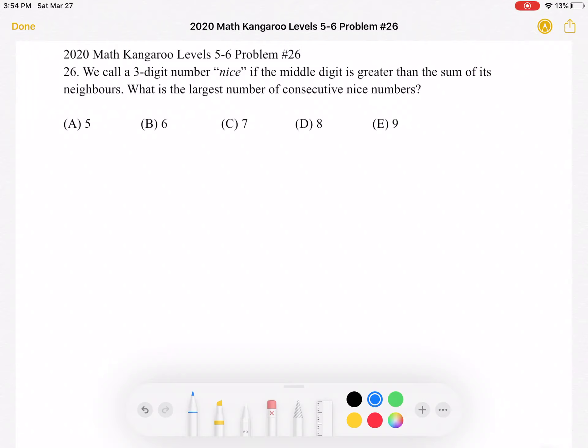This is the 2020 Math Kangaroo Levels 5-6 Problem Number 26. We call a three-digit number nice if the middle digit is greater than the sum of its neighbors. What is the largest number of consecutive nice numbers?